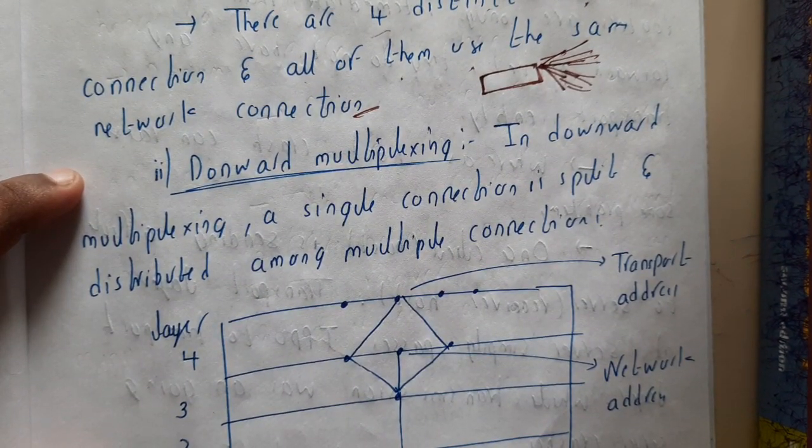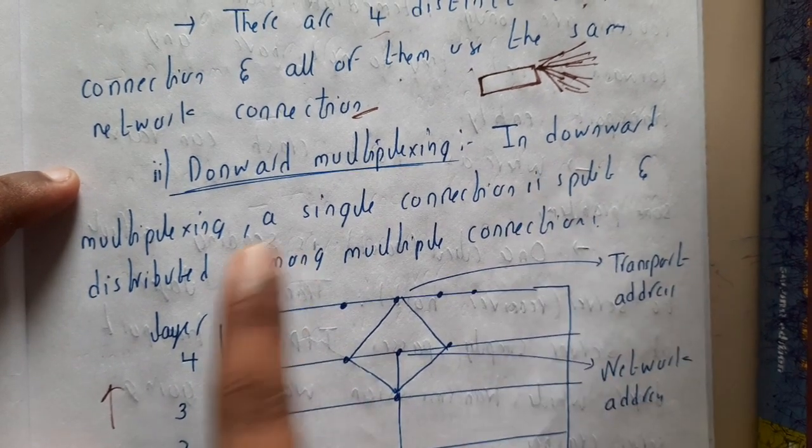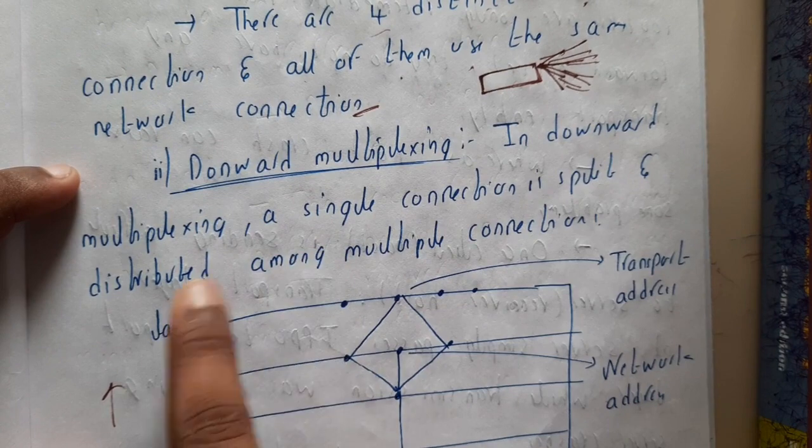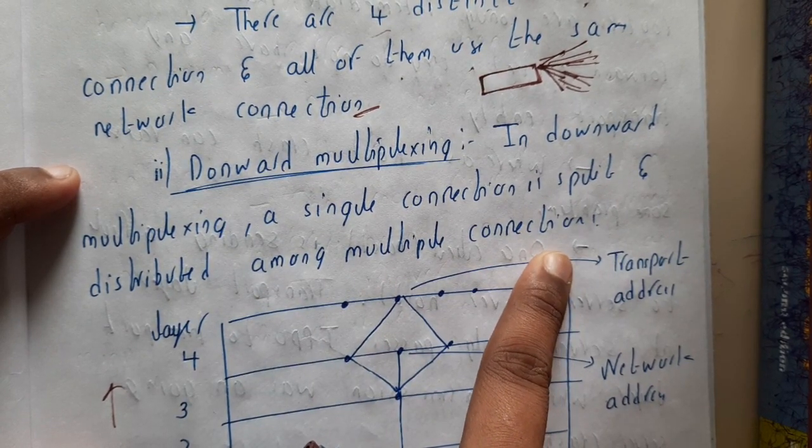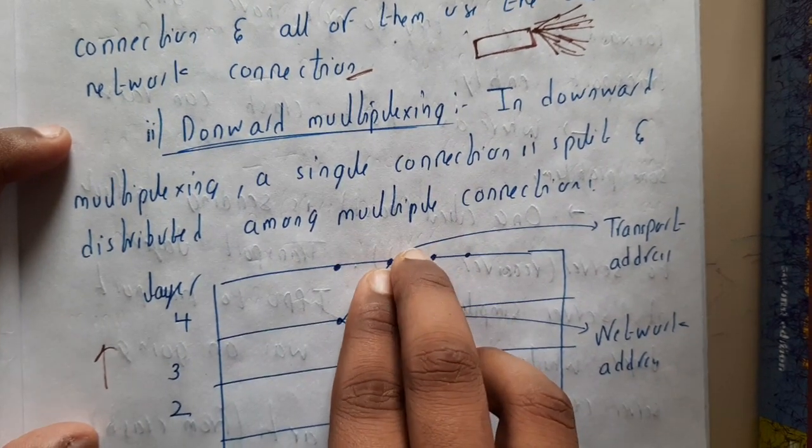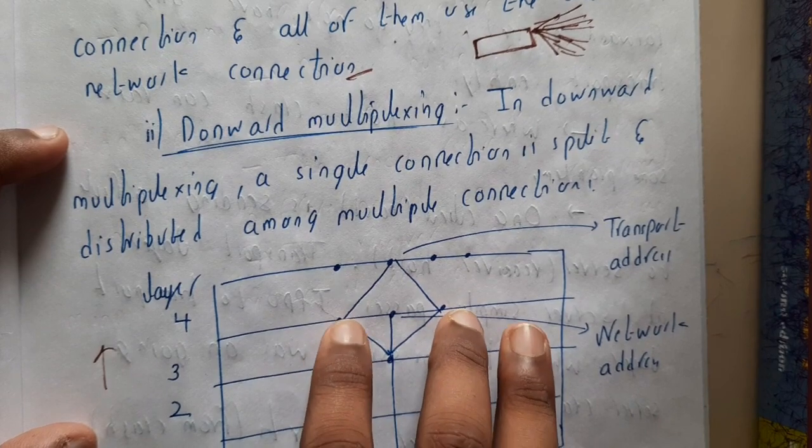Similarly downwards, so downwards will be upwards. It is the opposite. In downward multiplexing, a single connection is split and distributed among multiple connections. If you notice here, the definition also states that it is dividing into two types.